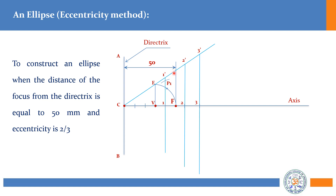So now you have P2 and on the other side P2-dash. Repeat the same procedure to get P3: from 3 to 3-dash, measure this distance, then with F as center draw the arc. Draw the arc on the other side also — since you have already set the compass to the distance, you can complete the other side too. This gives you P3-dash. Repeat the same procedure for sufficient points to define the curve.